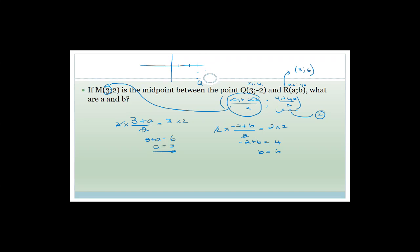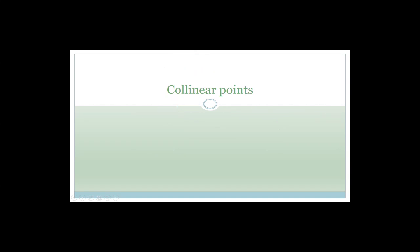Looking at it visually: Q is at (3, minus 2) and the midpoint is at (3, 2) - they're on the same vertical line. The distance from Q to the midpoint is 4 units, so you just go 4 units up to get y equals 6. But obviously this isn't always the case - they won't always give you that the midpoint is on the same vertical line.